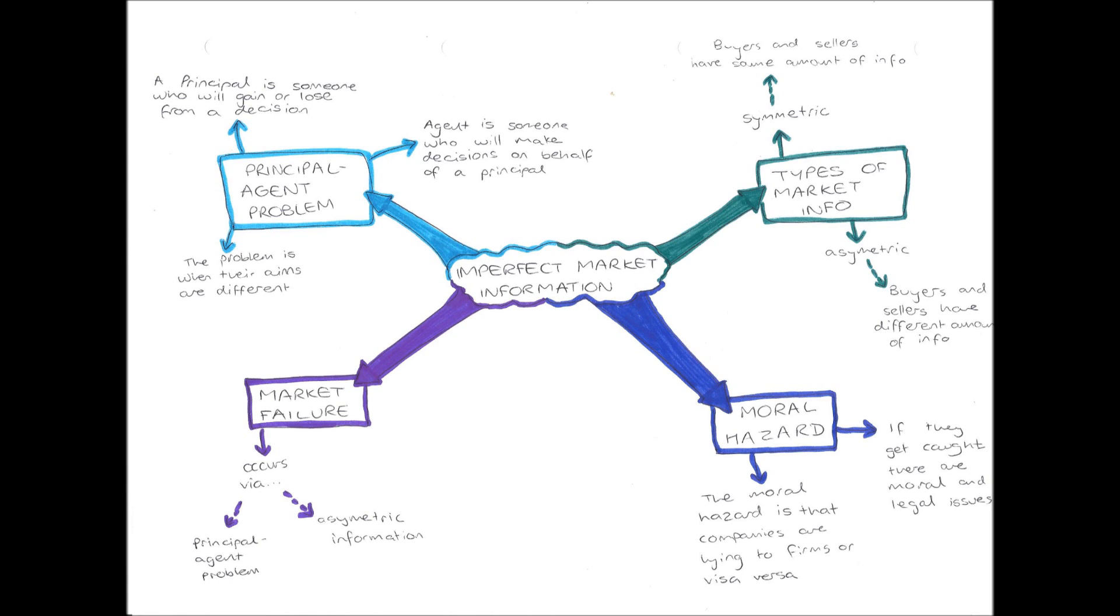So therefore the principal, in this case a shareholder, is somebody who will gain or lose from a decision that the company makes. An agent, on the other hand, is somebody who makes those decisions on behalf of the principal. So if we go back to our shareholder example, the agent is somebody who is making decisions at the company, most likely a higher manager, someone like a chief executive officer. They will make the decision that will decide whether the company does well or does badly, and therefore whether the principal, the shareholder, gains or loses from that decision.